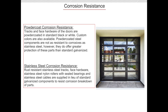Rust resistant stainless steel tracks, face hardware, stainless steel nylon rollers with steel bearings, and stainless steel cables can also be supplied in lieu of standard galvanized components to resist corrosion breakdown of parts.